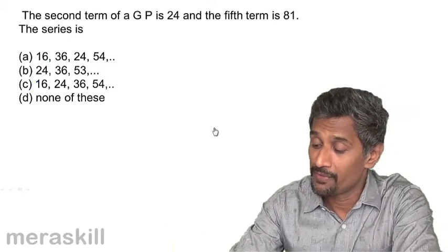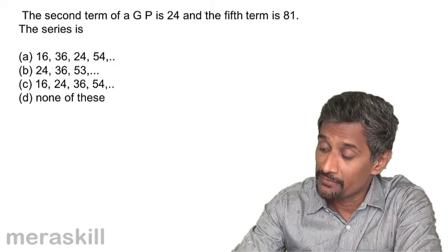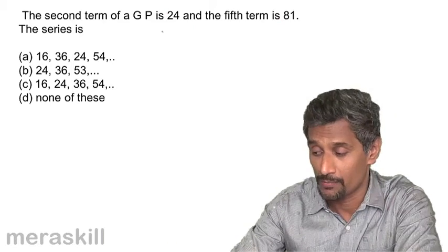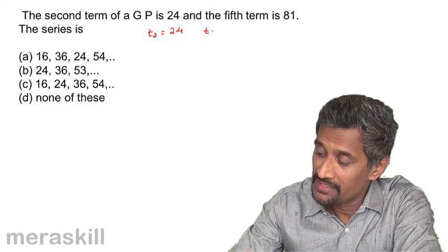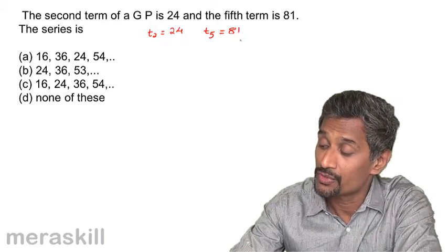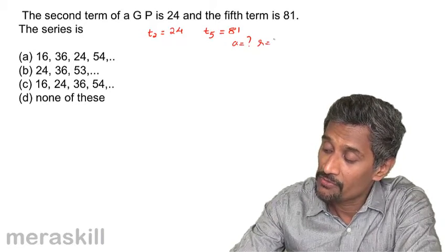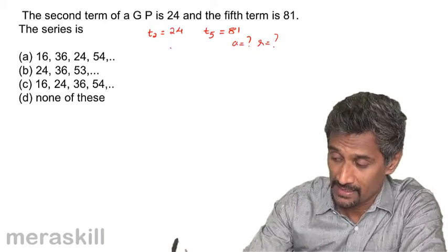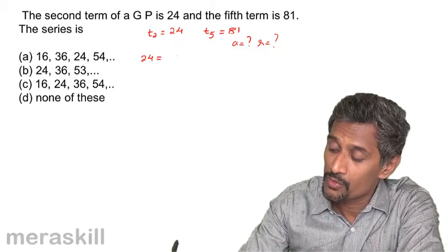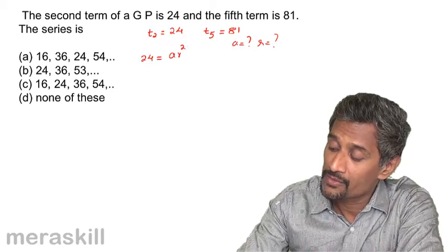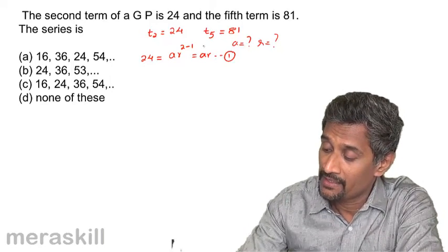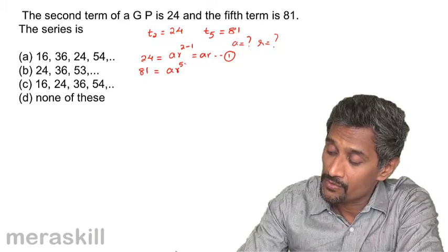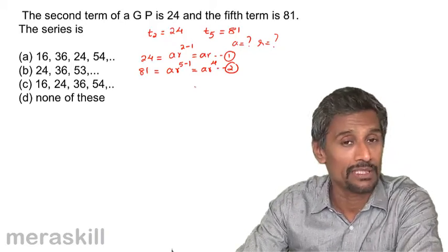Now the second term of a GP is 24 and the fifth term is 81. We need to find the series. So t₂ = 24, which gives us a·r = 24 — call that equation 1. And t₅ = 81, which gives a·r⁴ = 81 — call that equation 2. We need to solve these two equations.